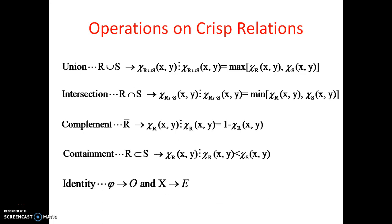For identity, phi is analogous to O and capital X is analogous to capital E. In crisp sets, phi is the null set; here it corresponds to the null relation O. Capital X is the complete set in crisp sets, and it is analogous to the complete relation E - the relational matrix having all values one.